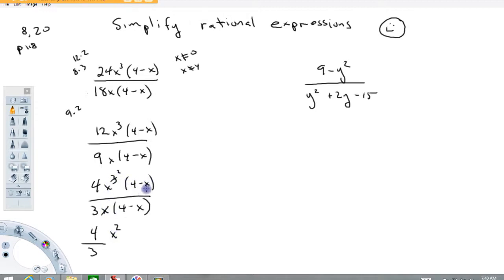And these guys right here, (4 - x) over (4 - x), these are just going to divide out. So this thing is done. So 4/3 x² is about as simple as we're going to write this expression.